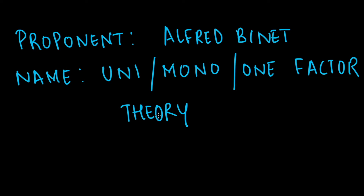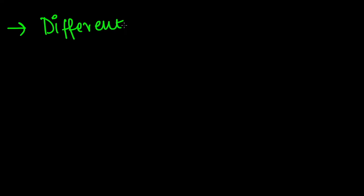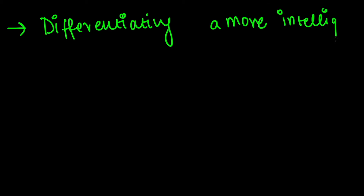Now let's dive into what the theory is about. This is the simplest theory you will find under the psychometric approach. What it tried to do is differentiate a more intelligent person from a less intelligent person — and the first key concept of the theory is exactly that: differentiating a more intelligent person from a less intelligent one.